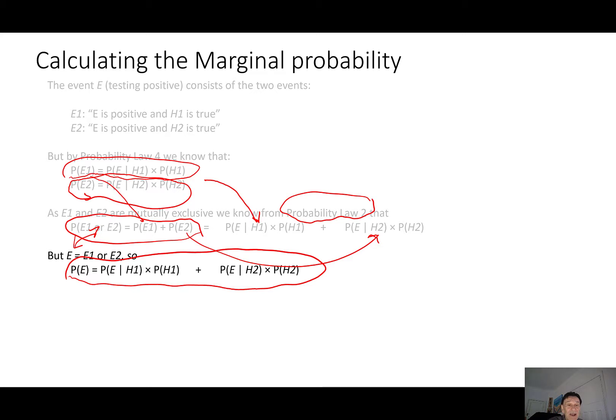So now we can actually plug the values in. Probability of E given H1 is 0.99. We know that that is 0.001. We know that that is 0.095. Well, what's P of H2? Well, we know that P of H2 must be equal to 1 minus P of H1 because those are mutually exclusive and exhaustive events. So that's going to be equal to 0.999.